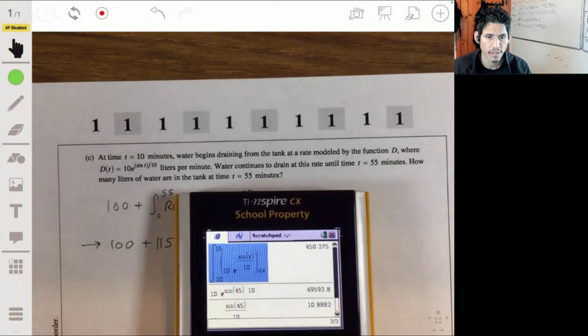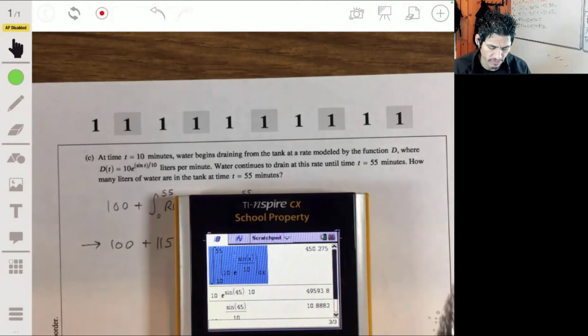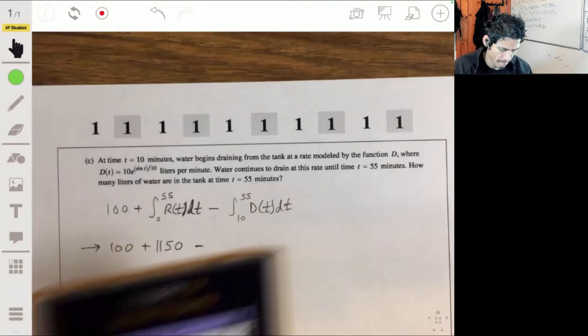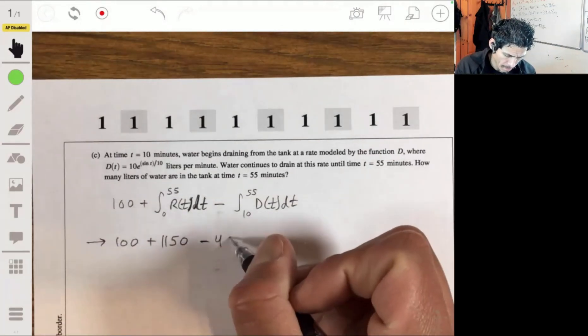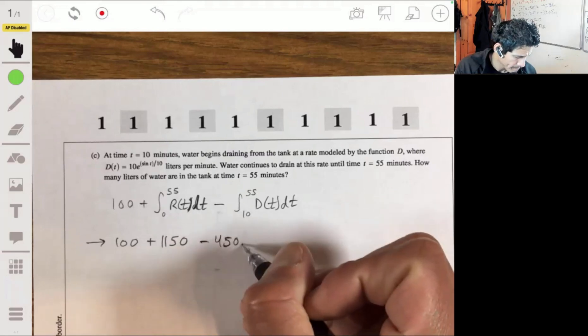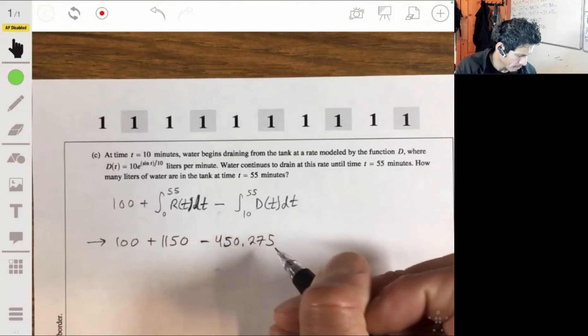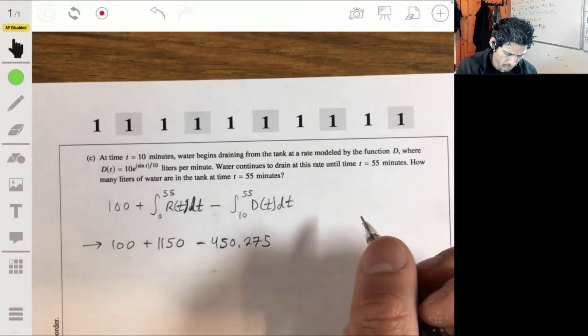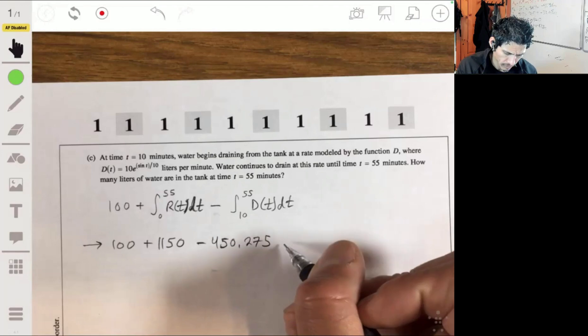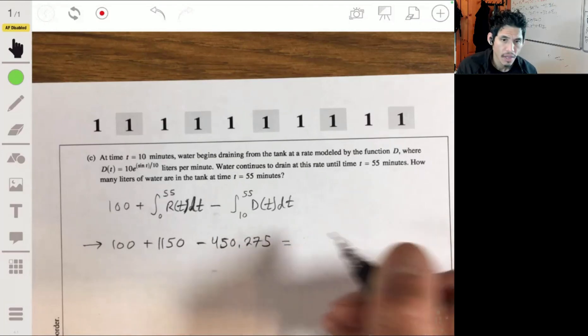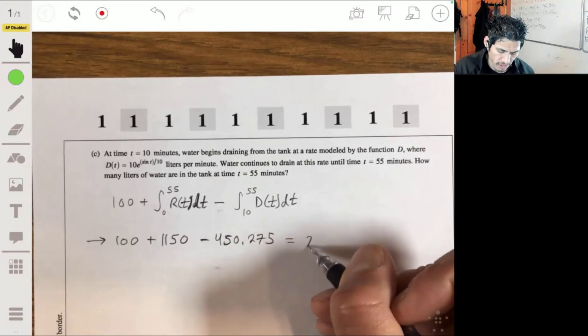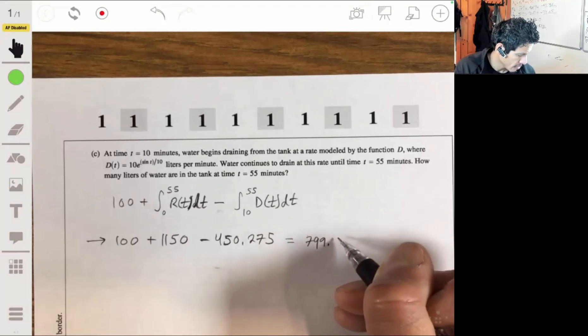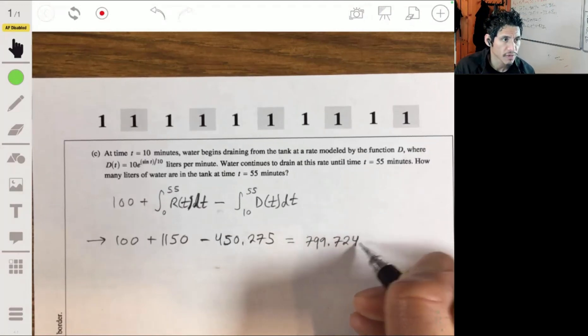About 450.275. And then this will be right under 800 liters of water, 799.7246 liters.